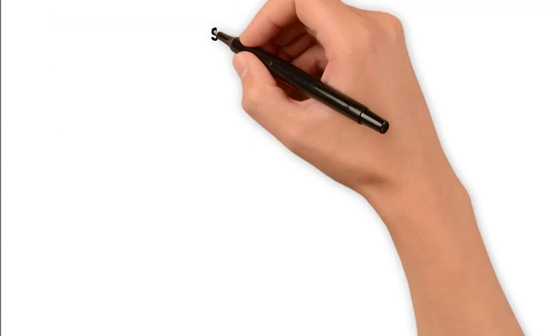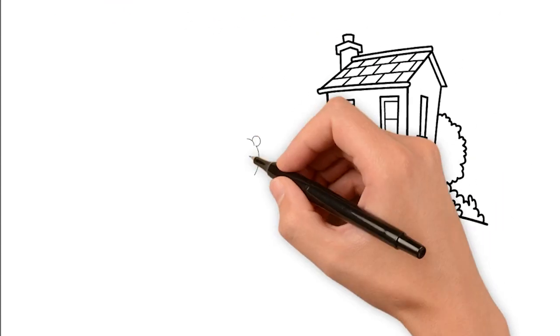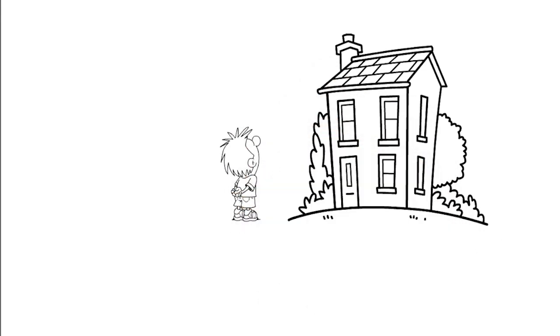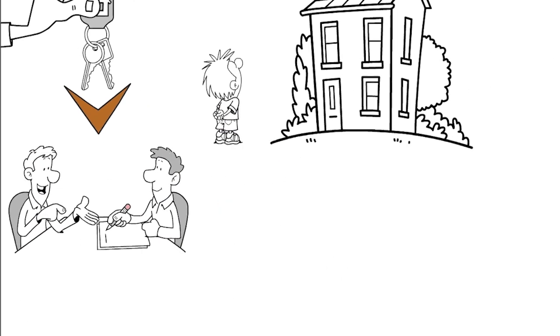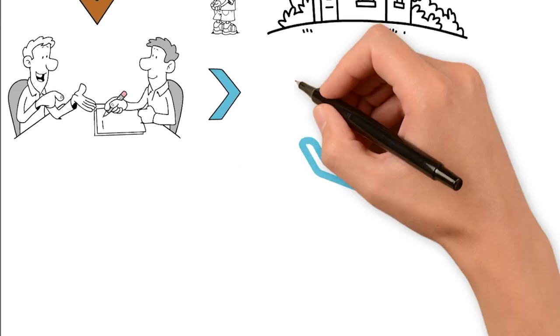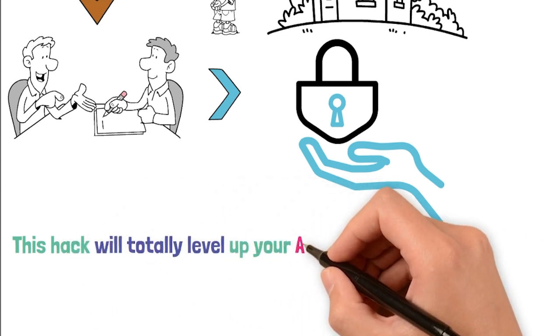Let's dive in and make your hosting journey a truly memorable one. Number one, first up is smart lock access. Now let's assume you're a guest arriving at an Airbnb after a long journey and the last thing you want is to fumble with the keys or coordinate to meet up with the host. That's where the magic of smart lock access comes in. This hack will totally level up your Airbnb game and save you a hell of a lot of time.